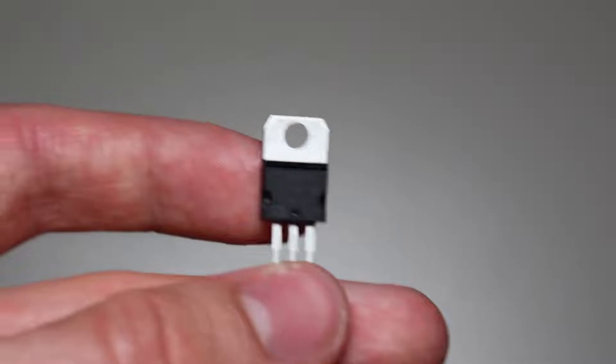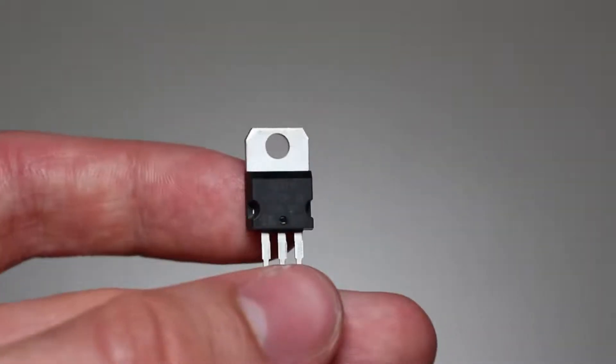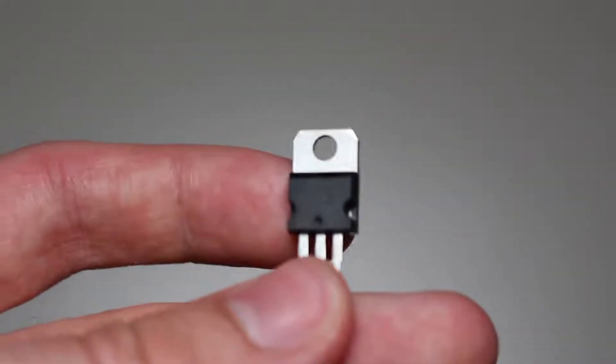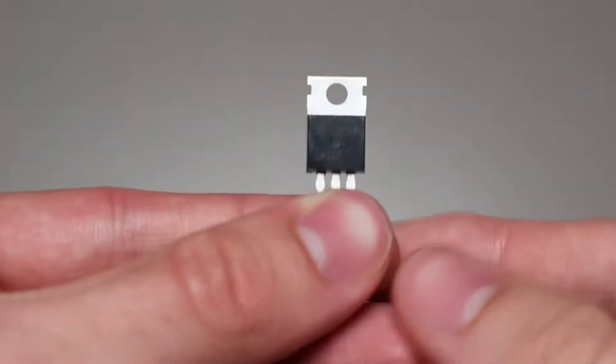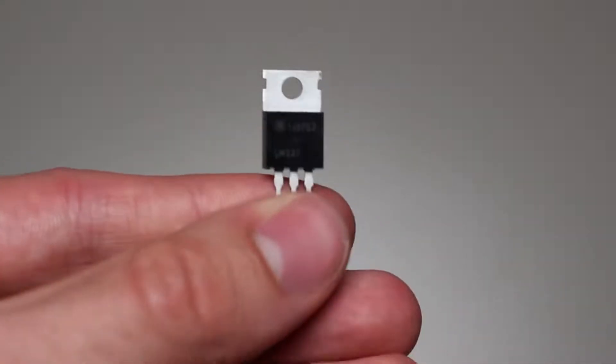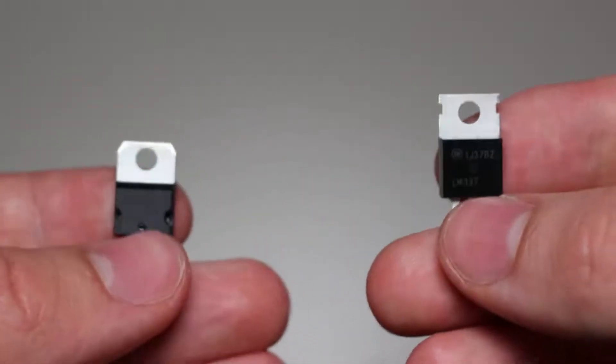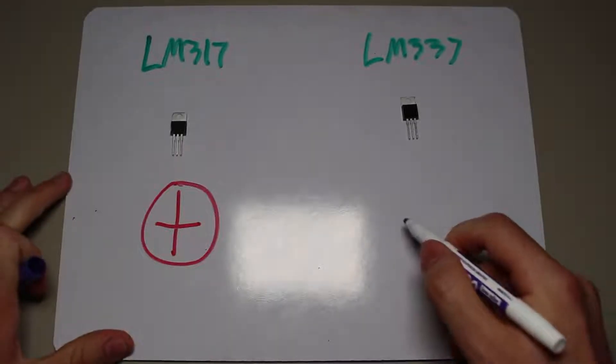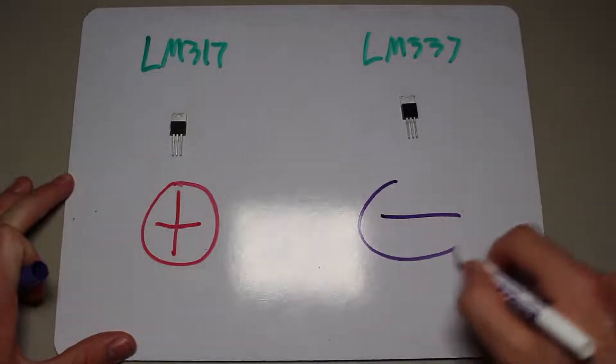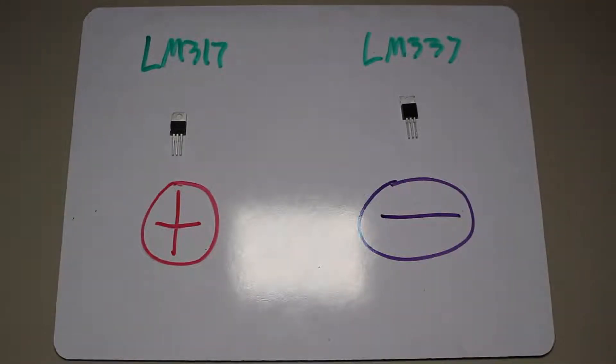The first application is very similar to what the LM317 is typically used for and it involves a very similar IC, the LM337. The LM337 is nearly identical to the 317, except that it regulates negative voltages as opposed to the LM317's positive voltages. Given an example,